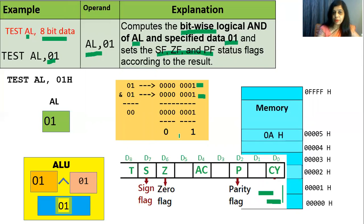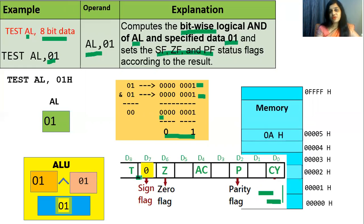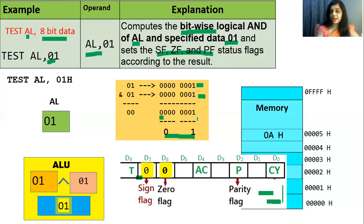The result is 01, and the flags are affected accordingly. The most significant bit is 0, indicating a positive result, so the sign flag is 0. For the parity flag: there is only one '1' in 01, which is an odd number of ones, so the parity flag is 0.